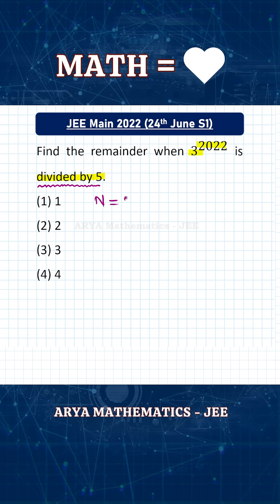Here the given number is 3 raised to 2022. When we are dividing a number by 5, the digit at unit place will decide the remainder.